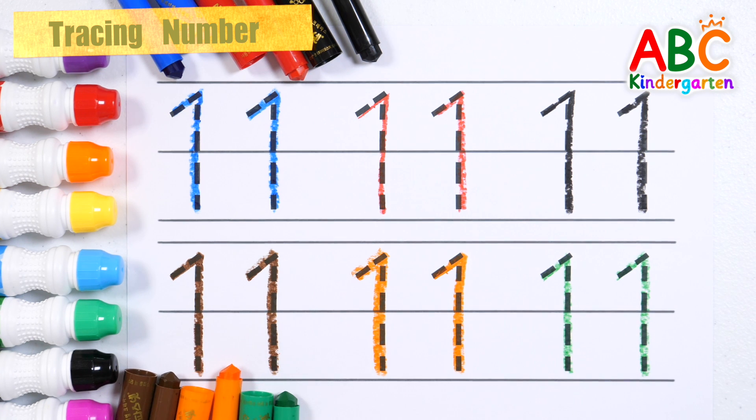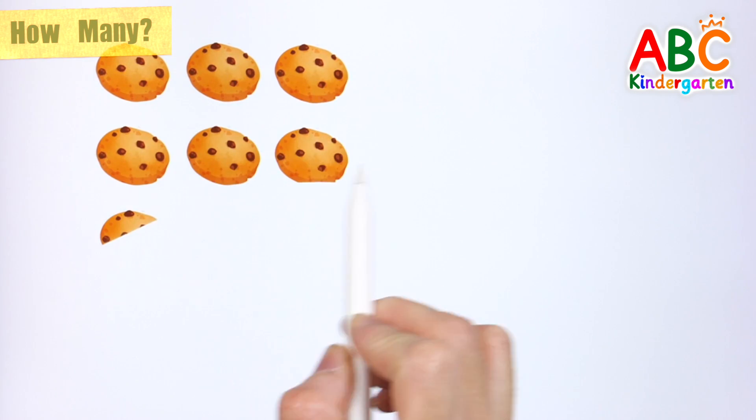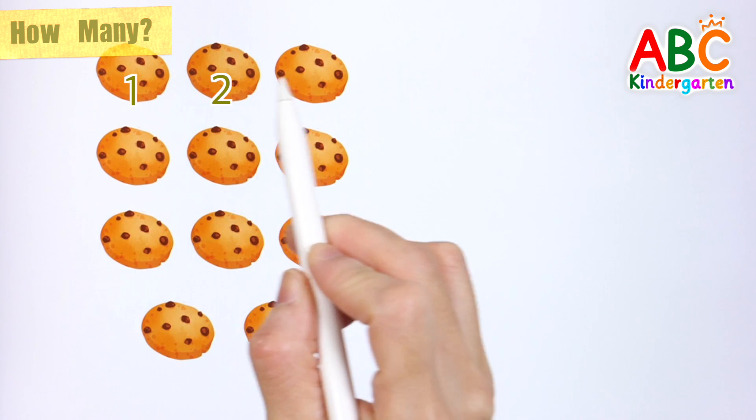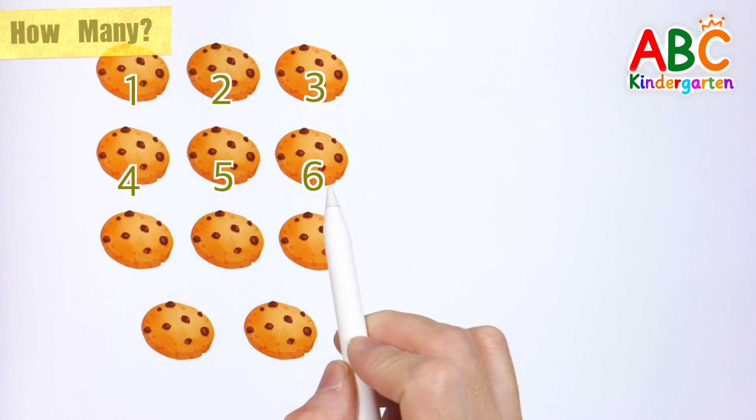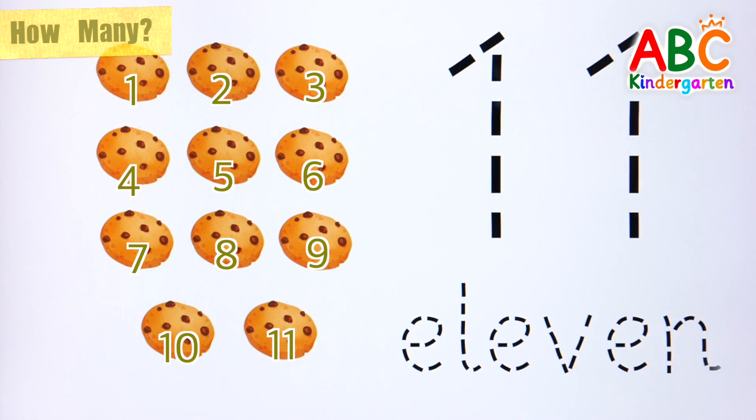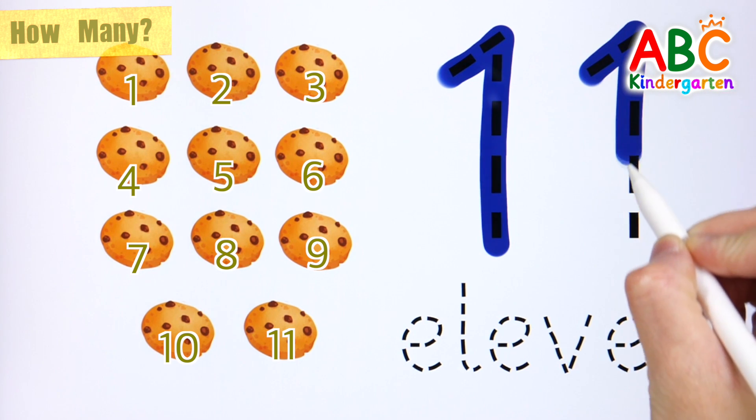11. Great job! There are sweet cookies! Let's count how many cookies there are in total and write the number. 1, 2, 3, 4, 5, 6, 7, 8, 9, 10, 11. There are 11 cookies in total. 11.